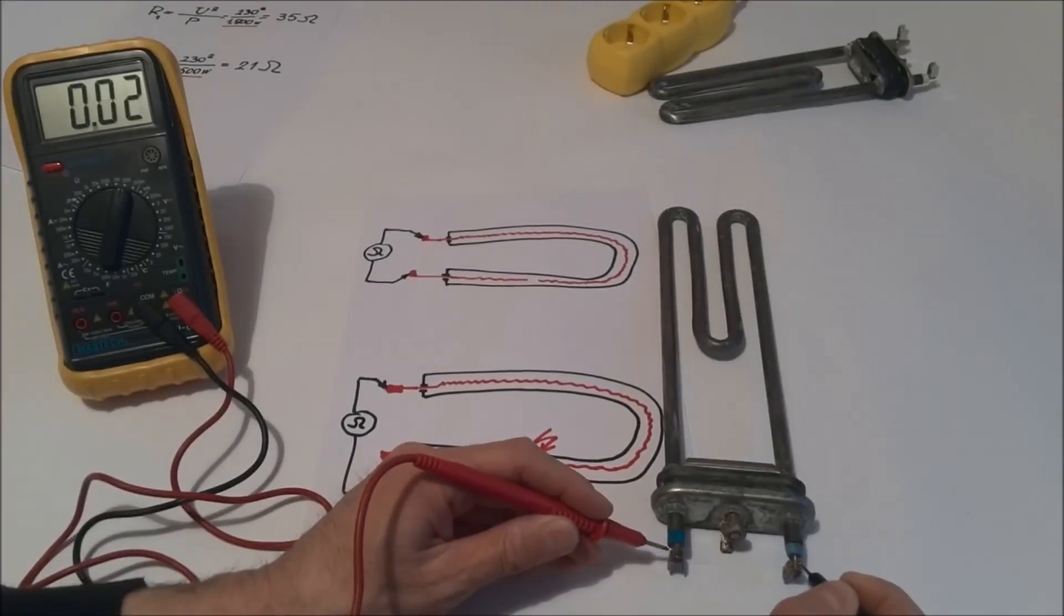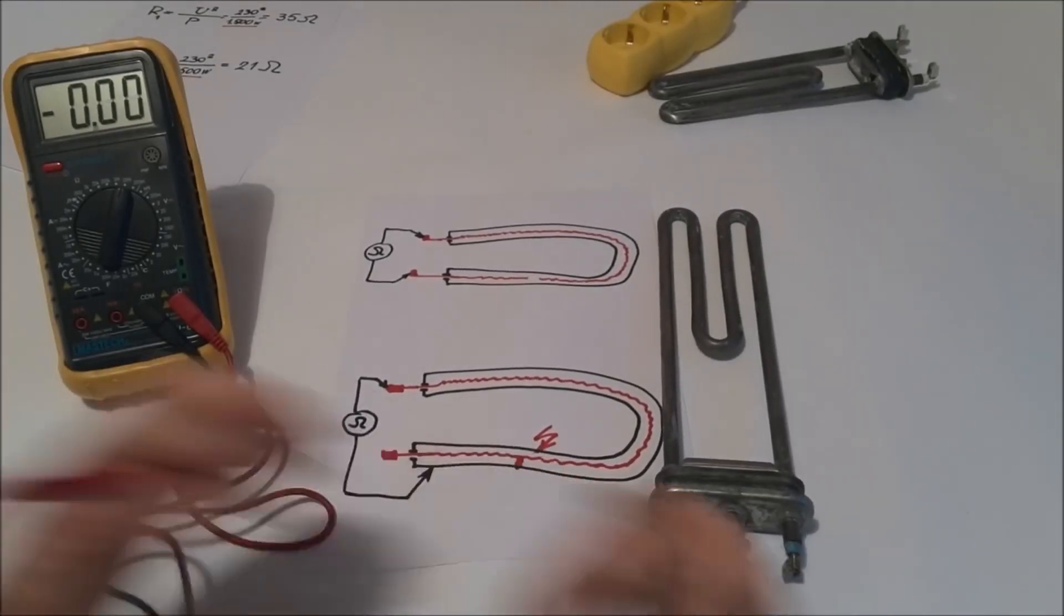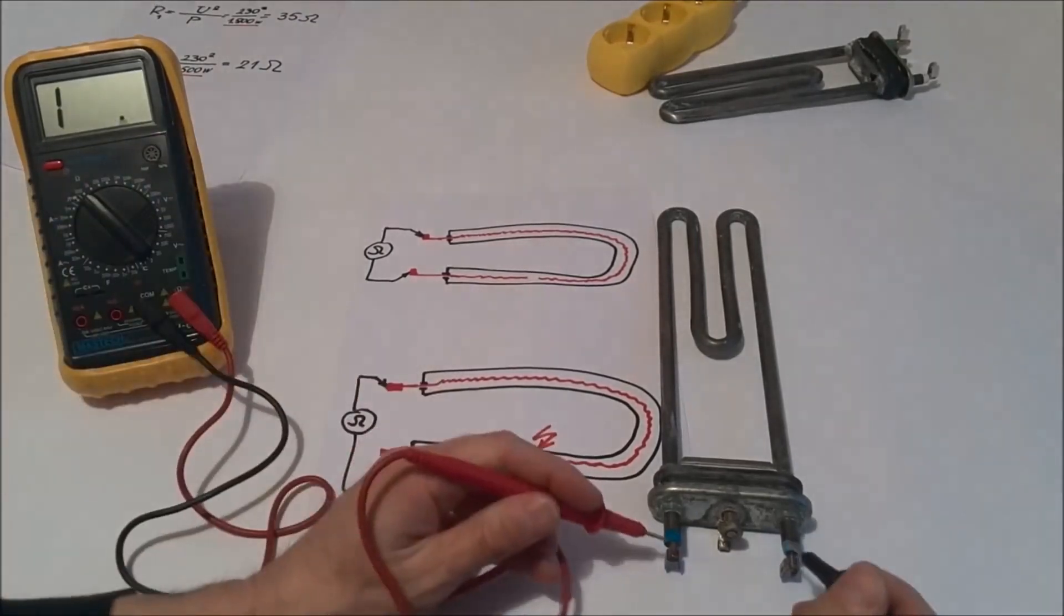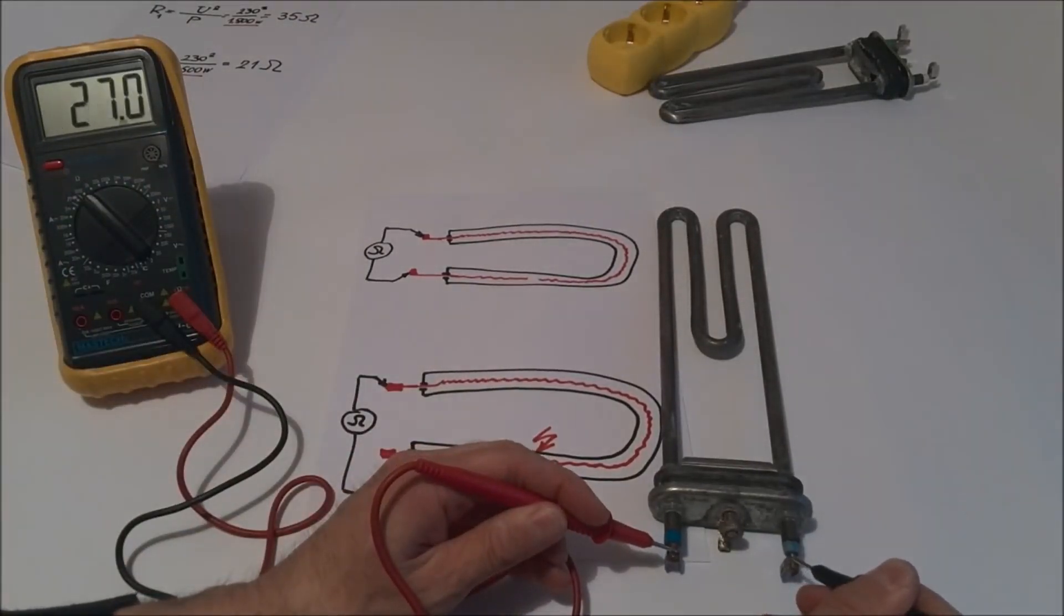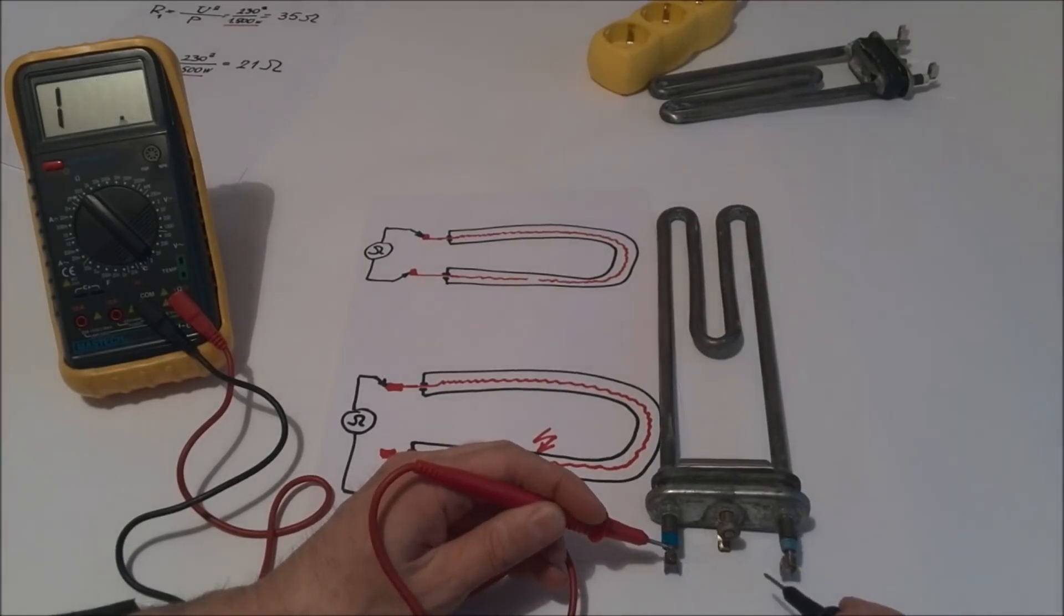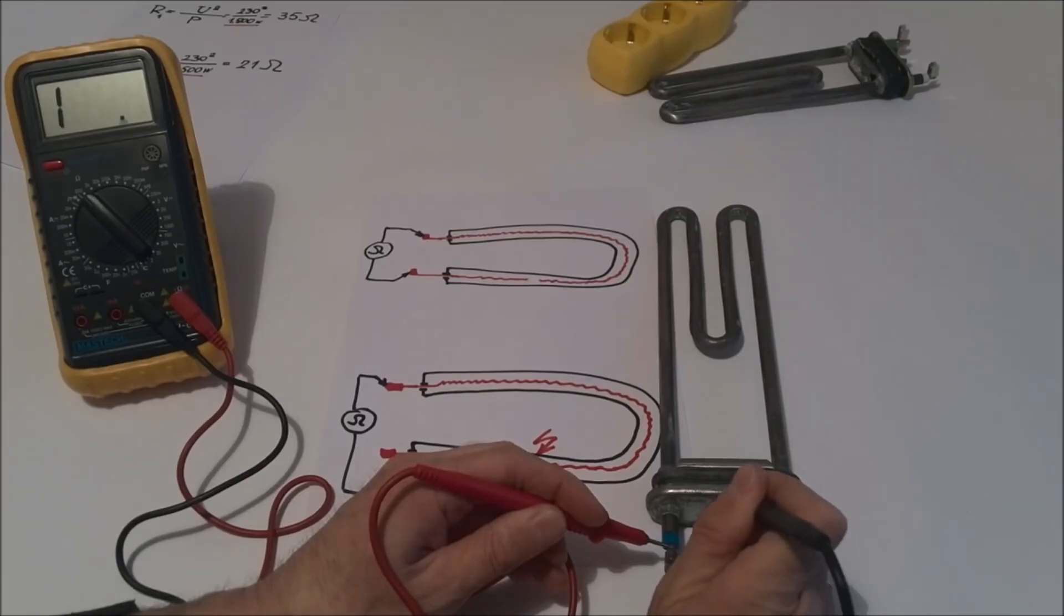Now we measure resistance. We will now reduce the scope. The first measurement indicates that the heater is functional, so it is not interrupted, but we must also check that the heating thread is not somewhere in contact with the cover.